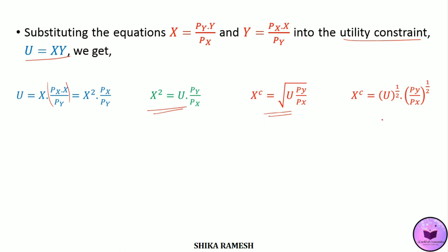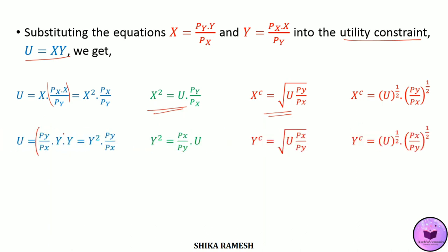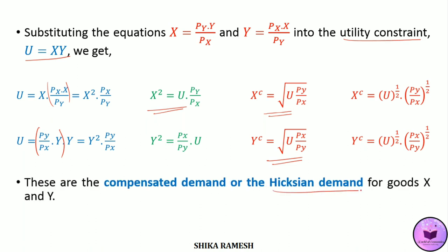Similarly, substituting in the place of x we get u equals Py by Px times y, times y, which equals y squared times Py by Px. So y squared equals Px by Py times u. Bringing the square to the RHS gives y equals the square root of u times Px by Py. This can also be written as y equals u raised to 0.5 times Px by Py raised to 0.5. This is the Hicksian compensated demand for good x and y.